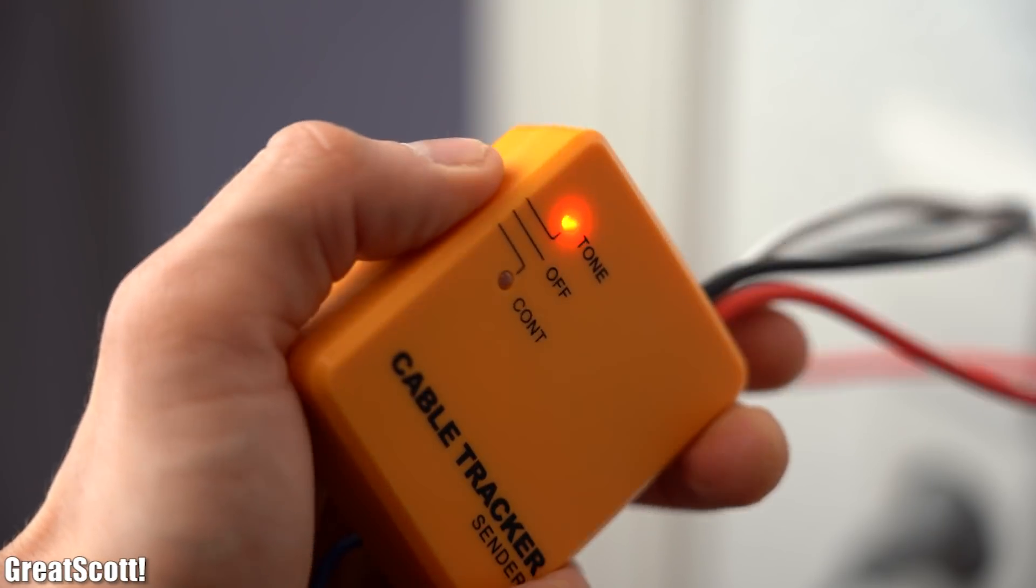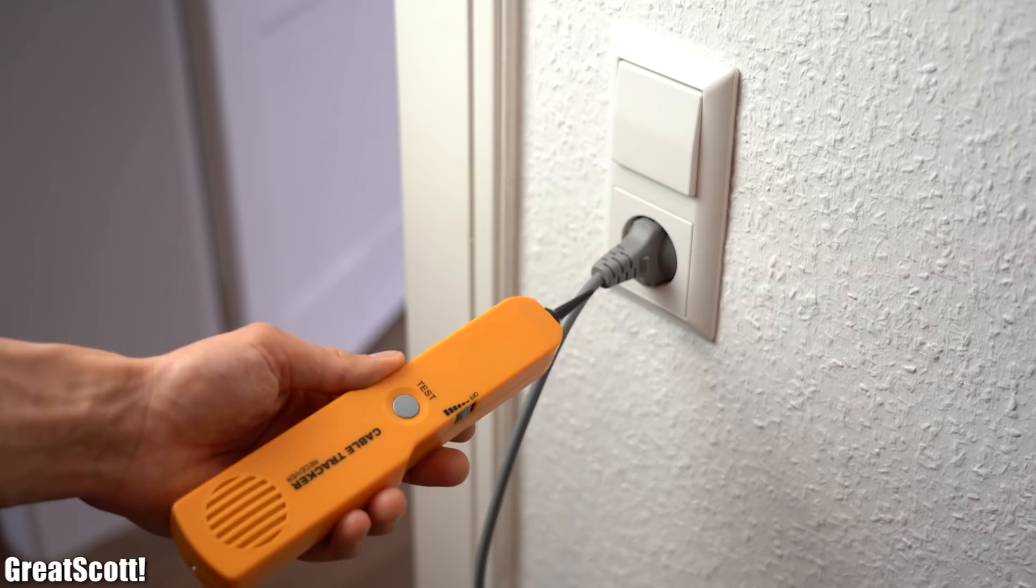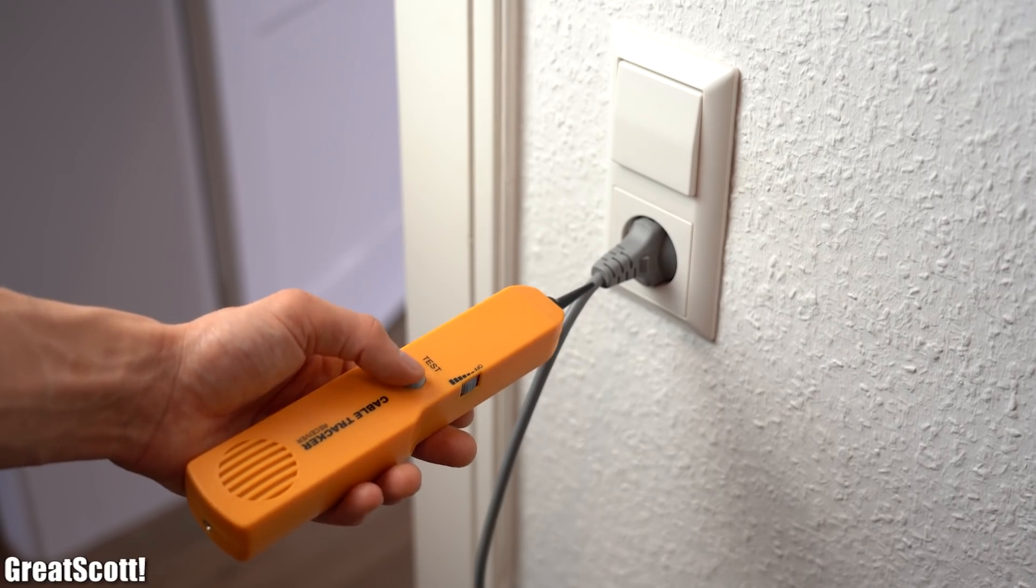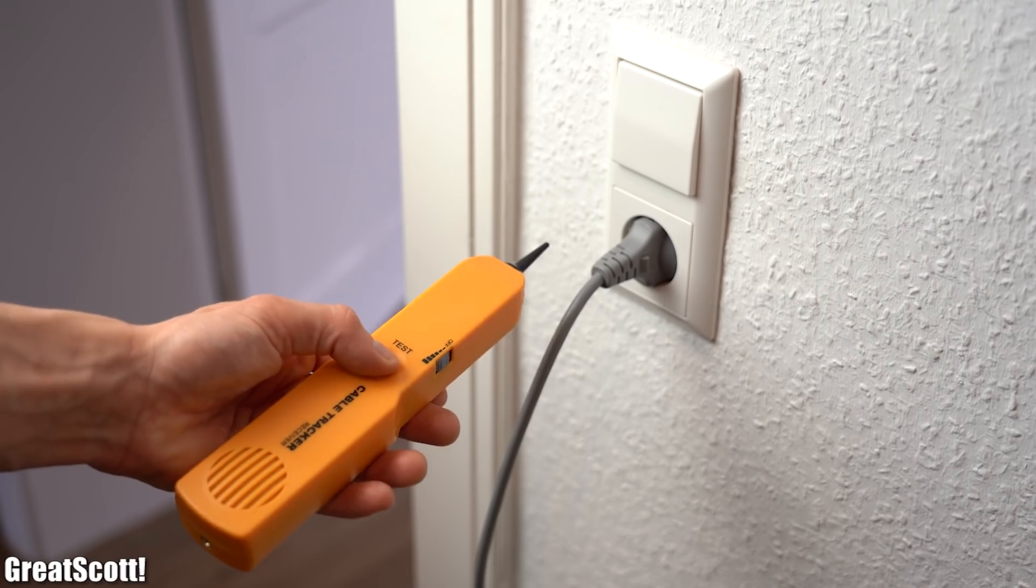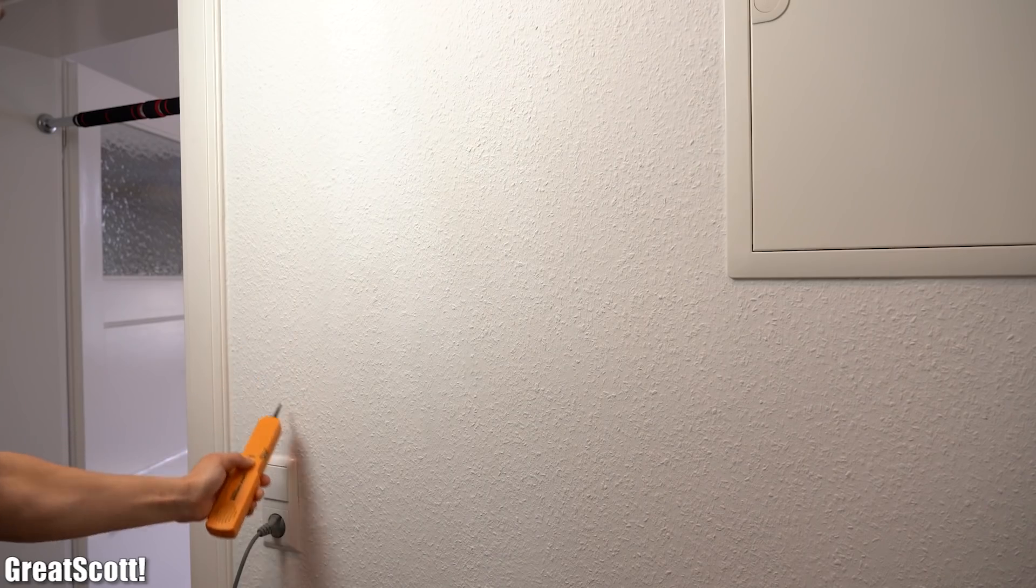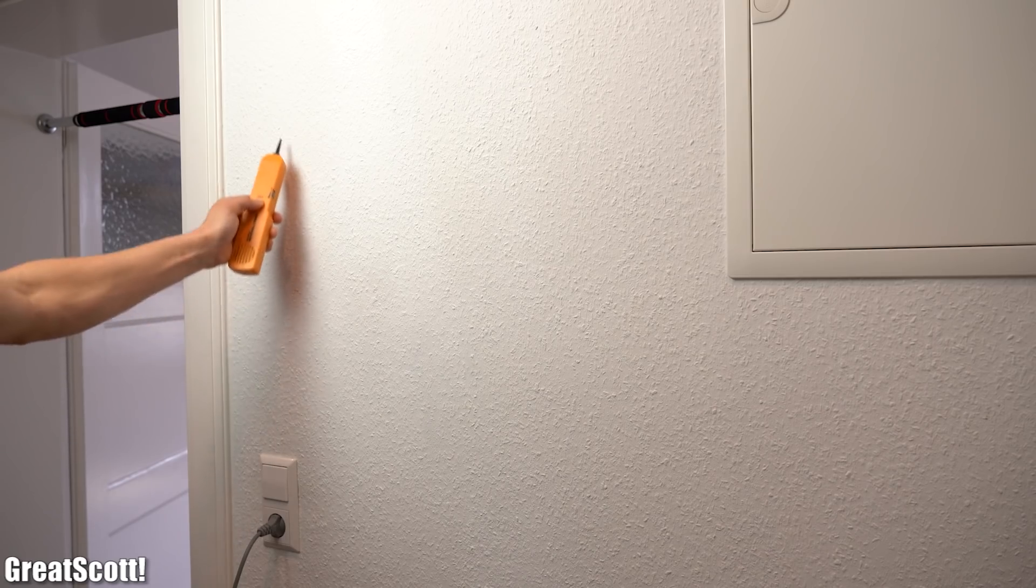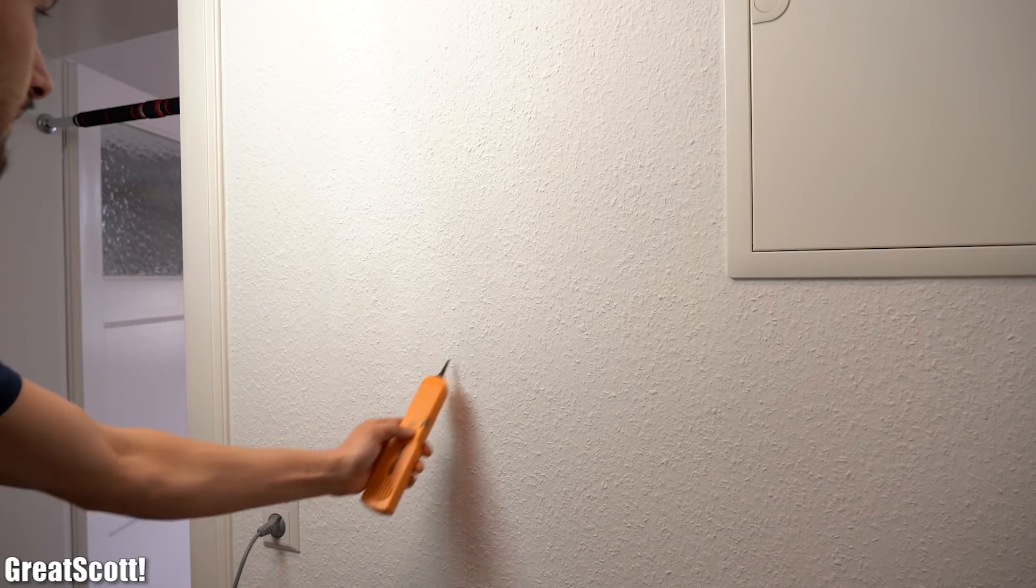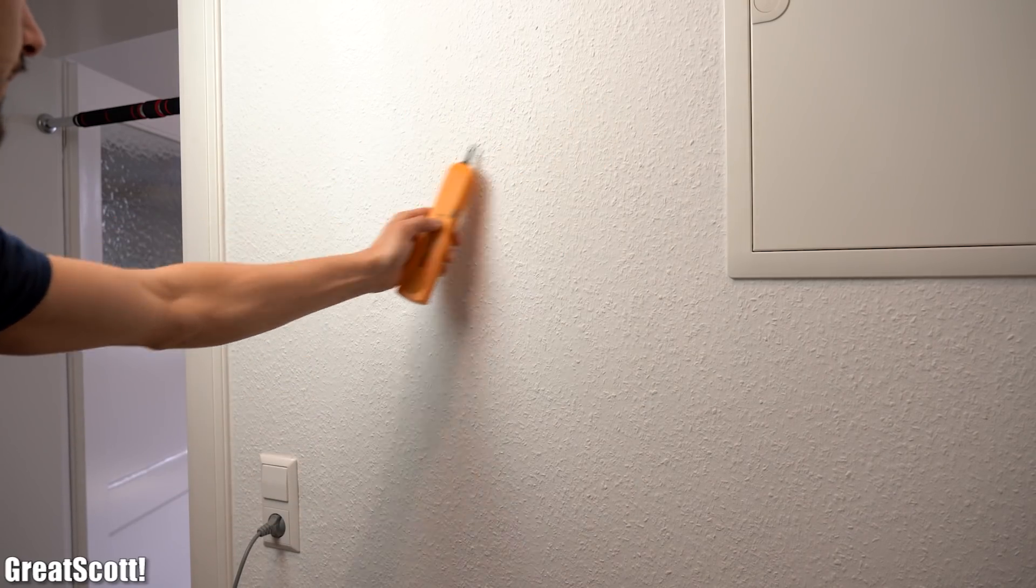I flip the power switch on to the tone mode. Last but not least, I need to hold the cable tracker receiver push button in order to activate it. As you can see and hear, whenever I come close to the wires in the wall, the received tone of the cable tracker becomes louder.